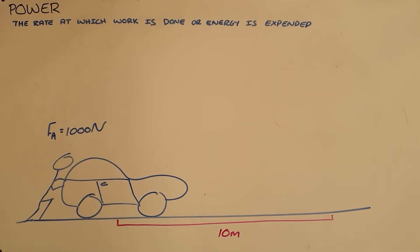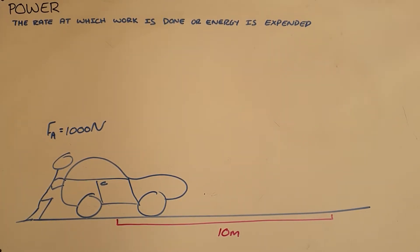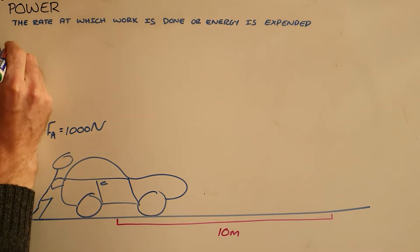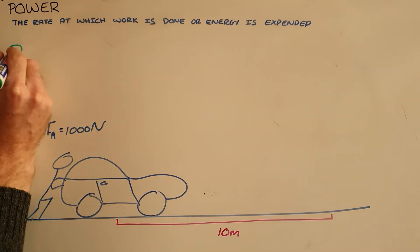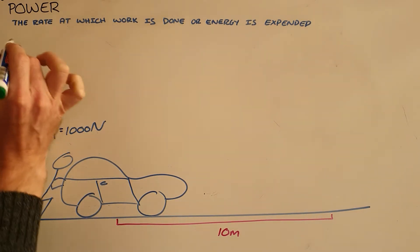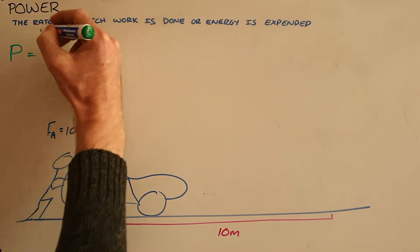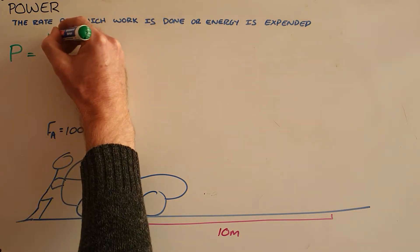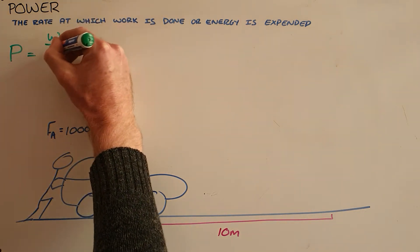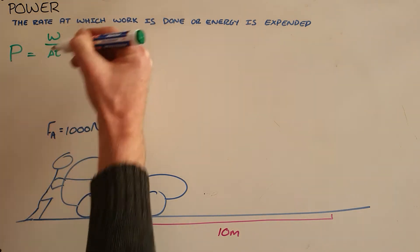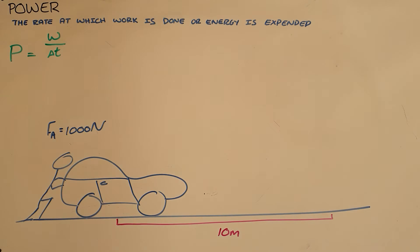Power is the rate at which work is done or energy is expended. From that definition we can find the formula which says that the rate at which work is done is the amount of work divided by the amount of time that it would take.